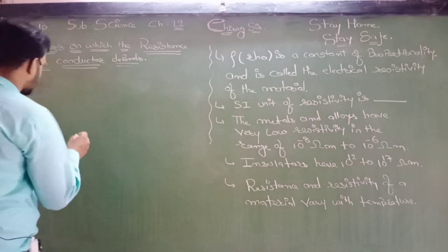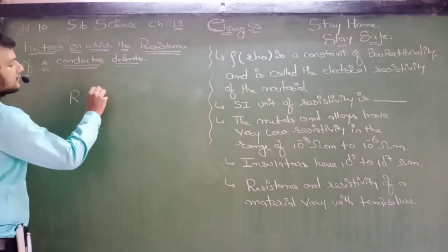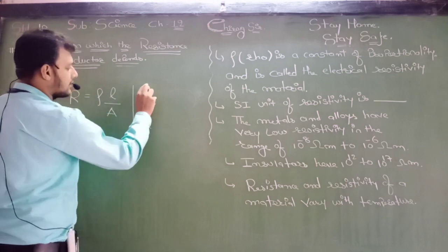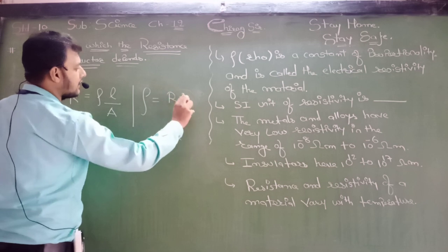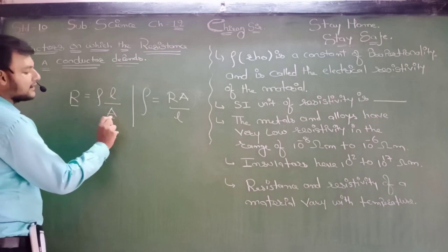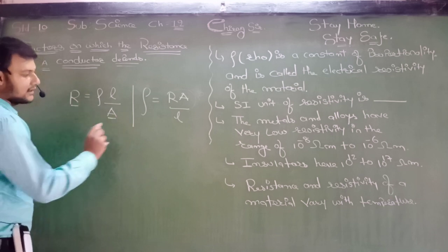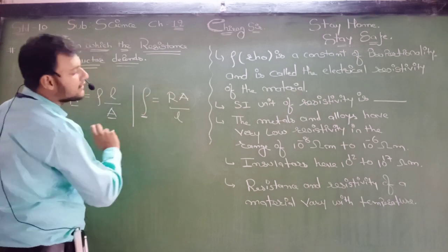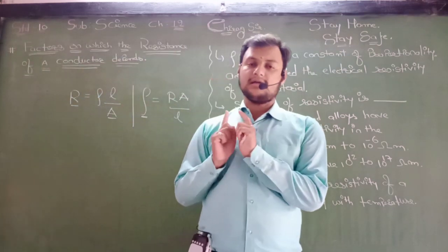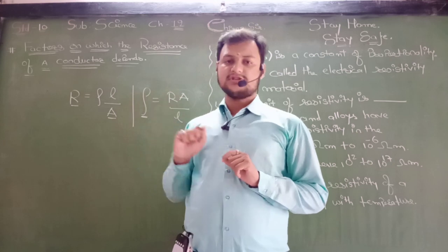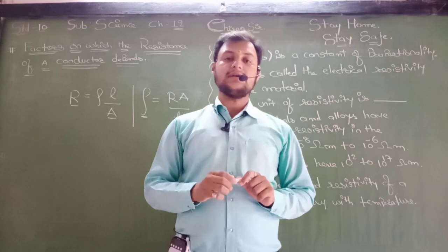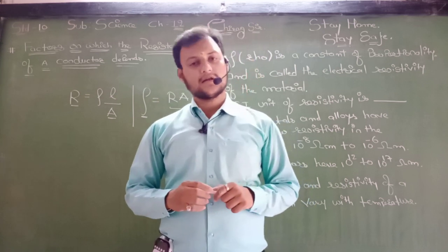See here: R equals rho L upon A, and rho equals R times A divided by L. Resistance depends inversely on area, while resistivity directly depends on area. I want to compare both formulas and both physical quantities — resistance is a physical quantity and resistivity is also a physical quantity.